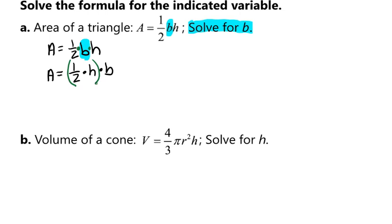And so now we're allowed to group this like that using the associative property. So right now, our one-half times h is multiplying with our b. And so in order to get the b by itself, because remember, that's what we want to get by itself, we're going to do the inverse of multiplication, which is division. So we're going to divide both sides by one-half h.